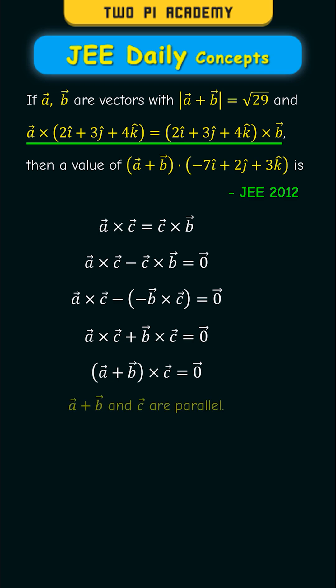From this, you can understand that vector A plus vector B and vector C are parallel to each other. Therefore, you can write that as lambda times the following vector, which is vector C.